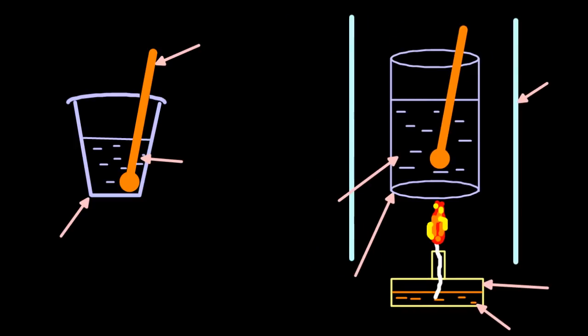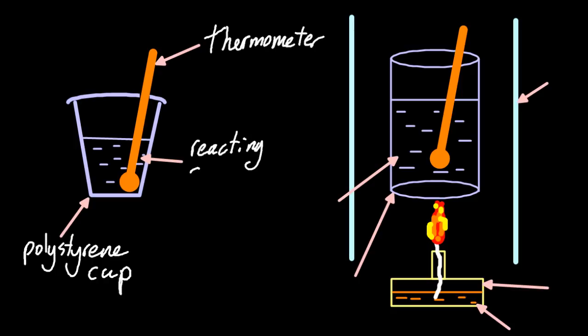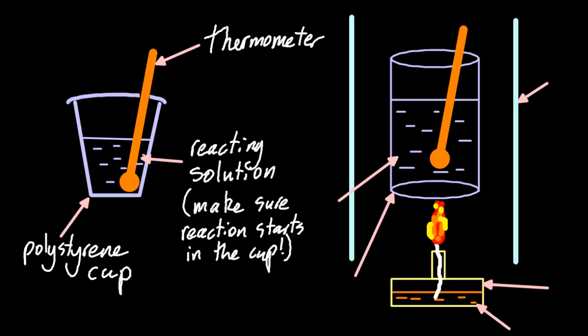On the left, we have a polystyrene cup. That's a good thermal insulator. It will keep any energy released in the system. A thermometer to measure temperature change and the reaction, possibly an acid and a base or something like that. Make sure the reaction starts in the cup, don't react to outside.